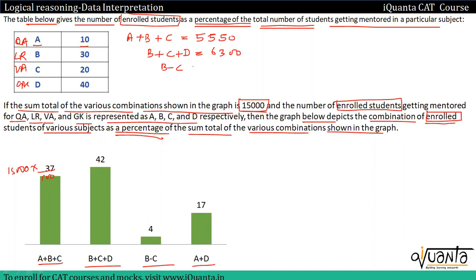b minus c value gives us 600, and a+d value is 17 into 150, that is 2550.